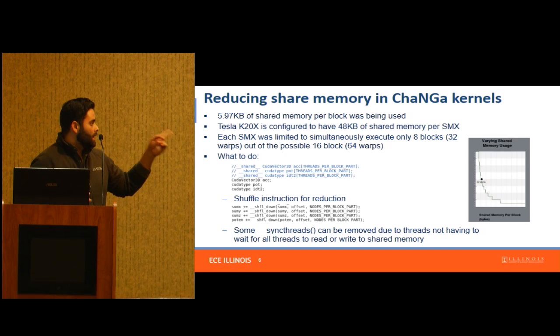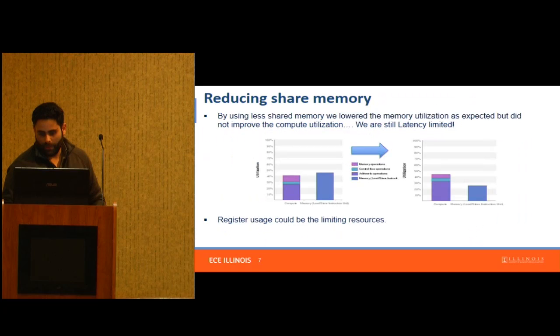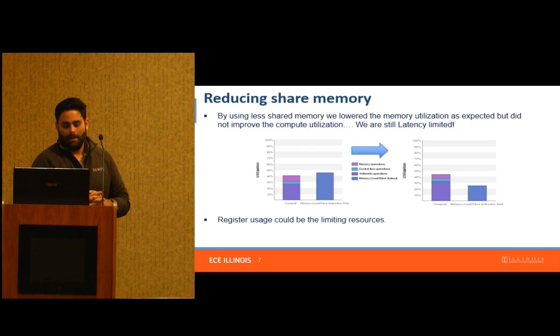Another nice thing that comes with removing shared memory and using shuffle instructions is that you can get rid of some synchronization steps that require you to make sure every thread has loaded the proper value into shared memory. So you also get an improvement there.